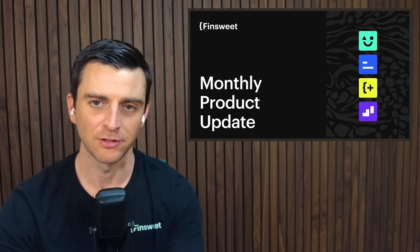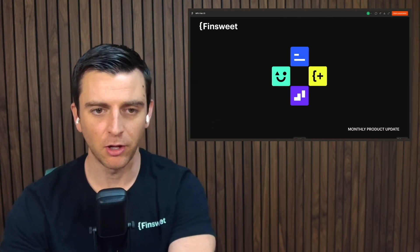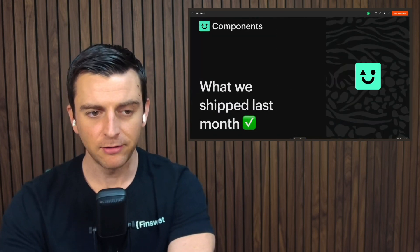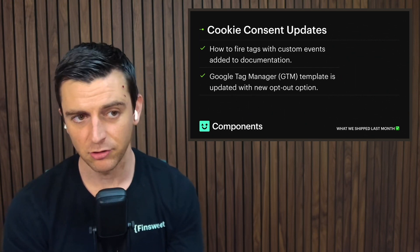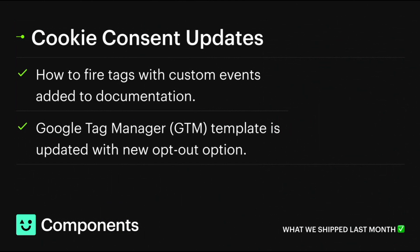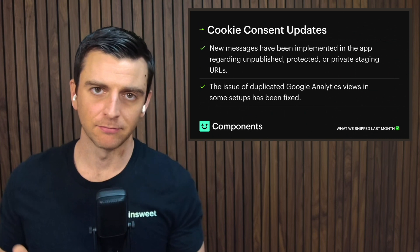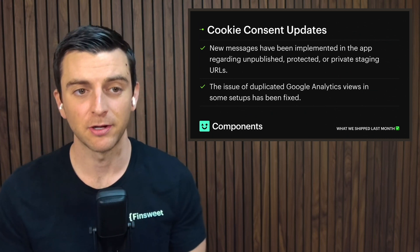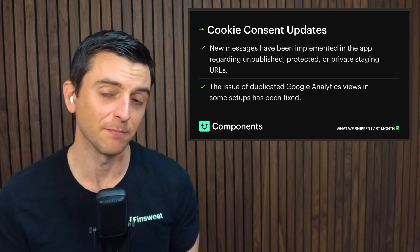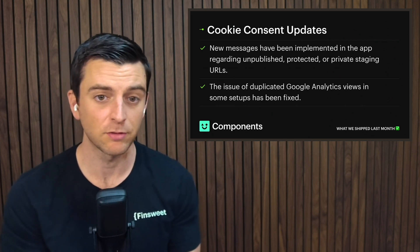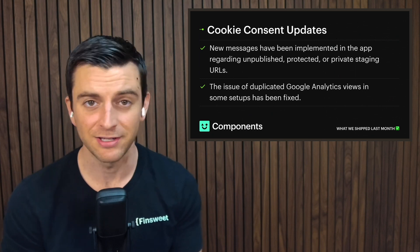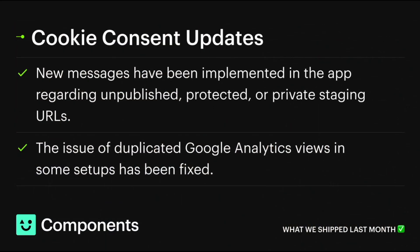Leading with components — we are always making updates here. What we shipped last month includes a couple of new updates to our cookie consent solution. We are now showing you how to fire tags with custom events in the documentation. We also have the Google Tag Manager template with the new opt-out option. As we hear feedback from users about cookie consent, we're trying to improve and make updates. We've also added new messages to the app regarding unpublished, protected, and private staging URLs to make the application clearer to use.